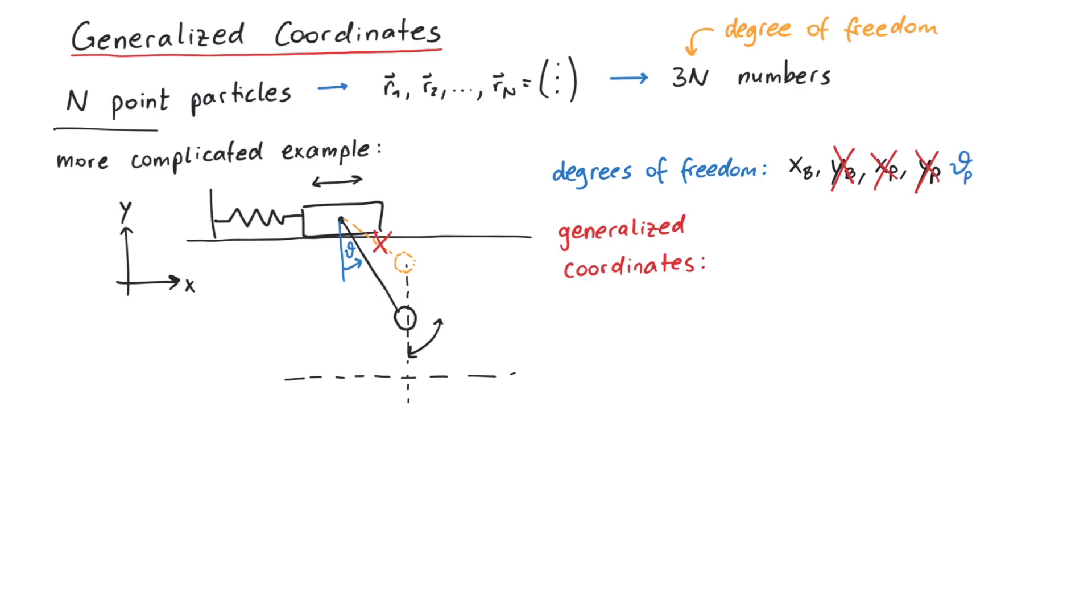Once we know the number of degrees of freedom of a system, we take a set of coordinates q1, q2 and so on, which are called generalized coordinates.